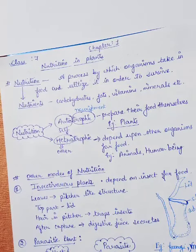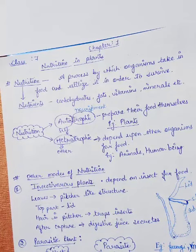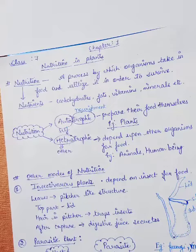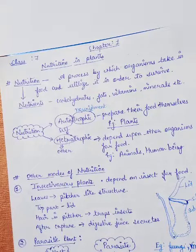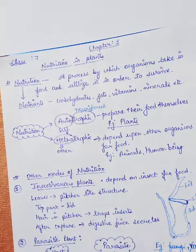'Hetero' means other, and again 'trophic' means nourishment. So, organisms that depend on other organisms for their food are called heterotrophs, and their mode of nutrition is called heterotrophic mode of nutrition. Examples are animals and human beings — we humans are also heterotrophs.